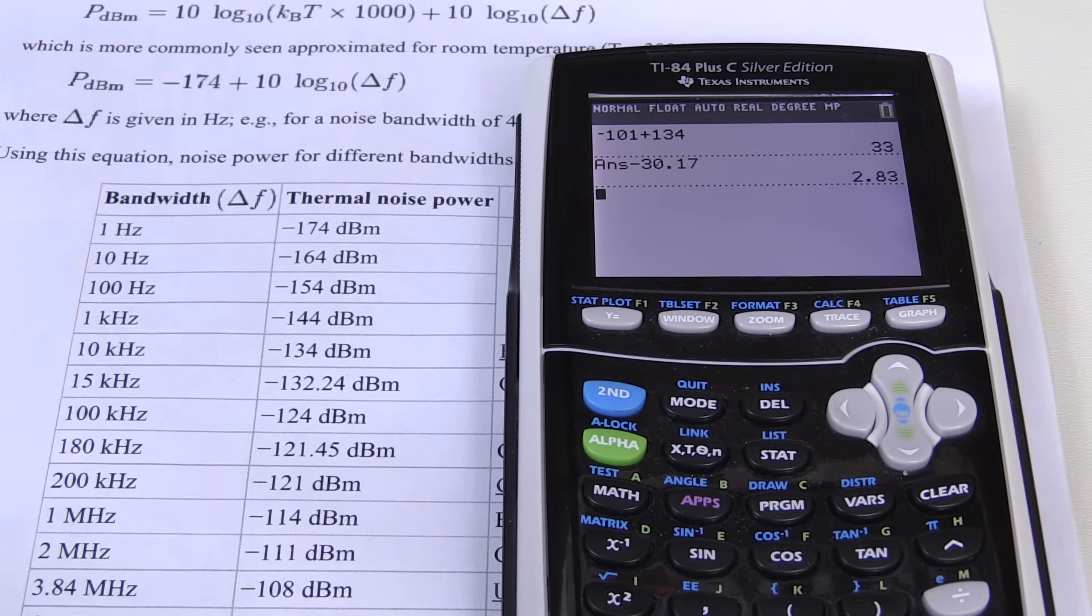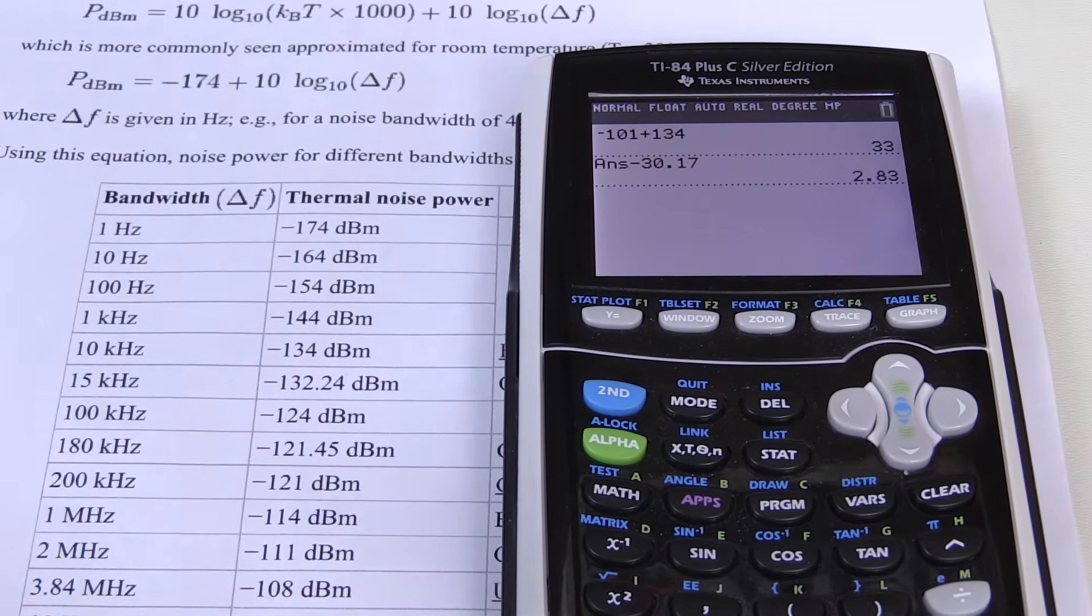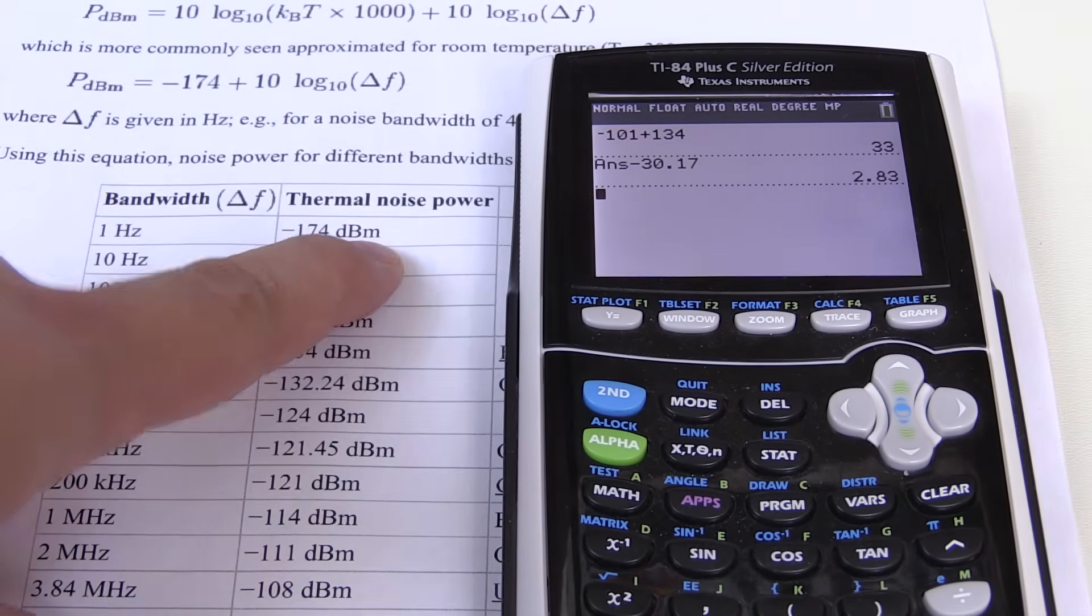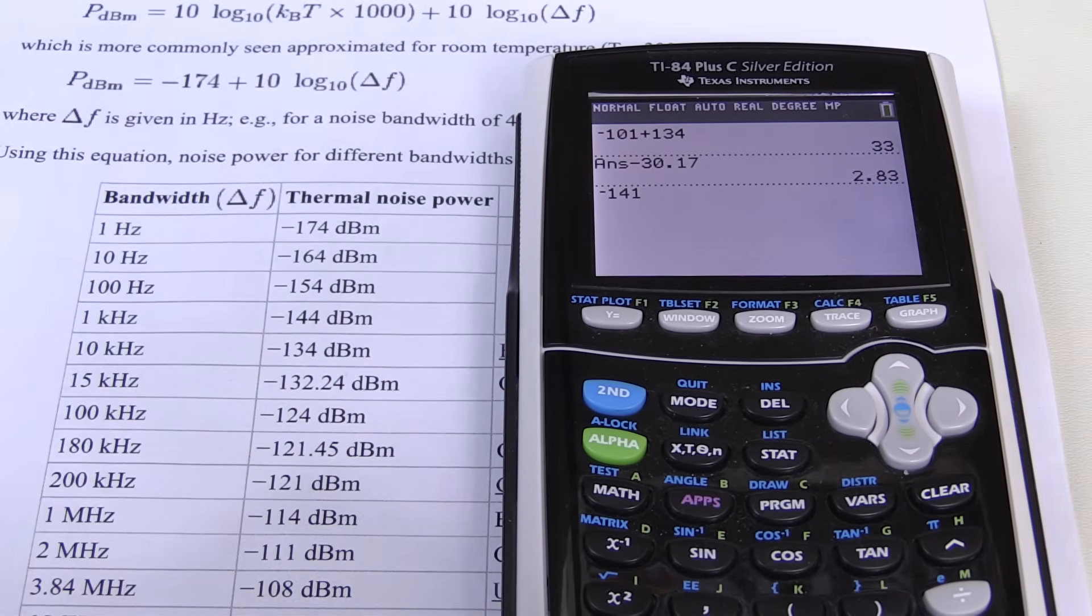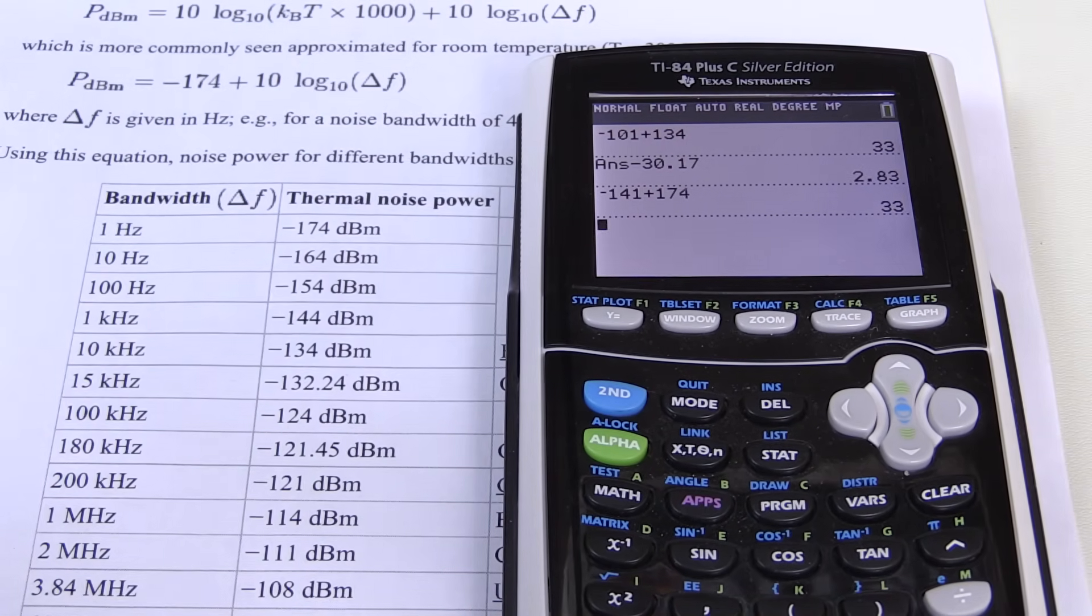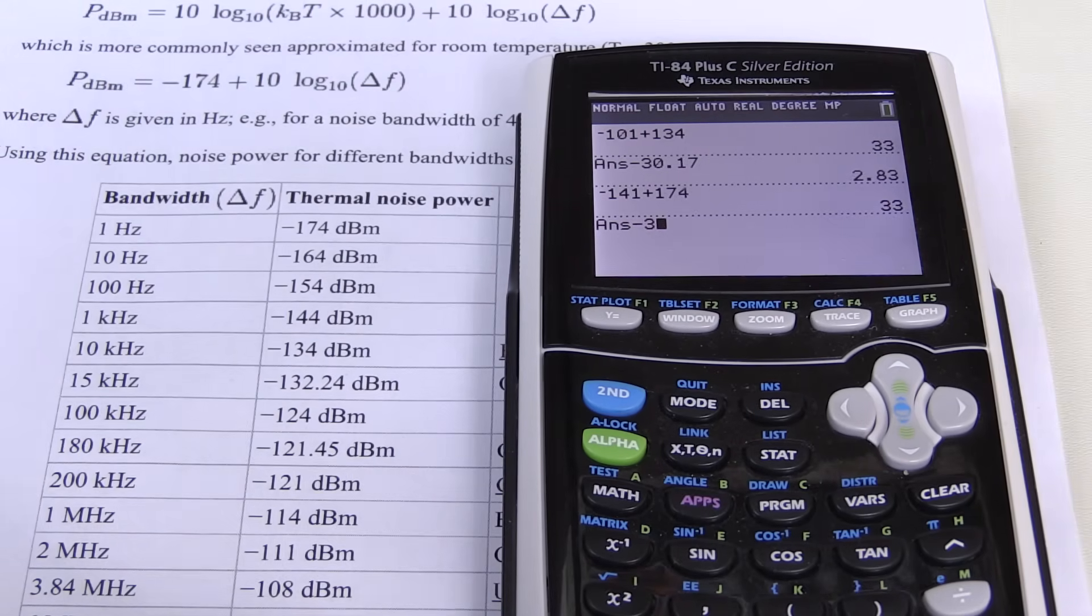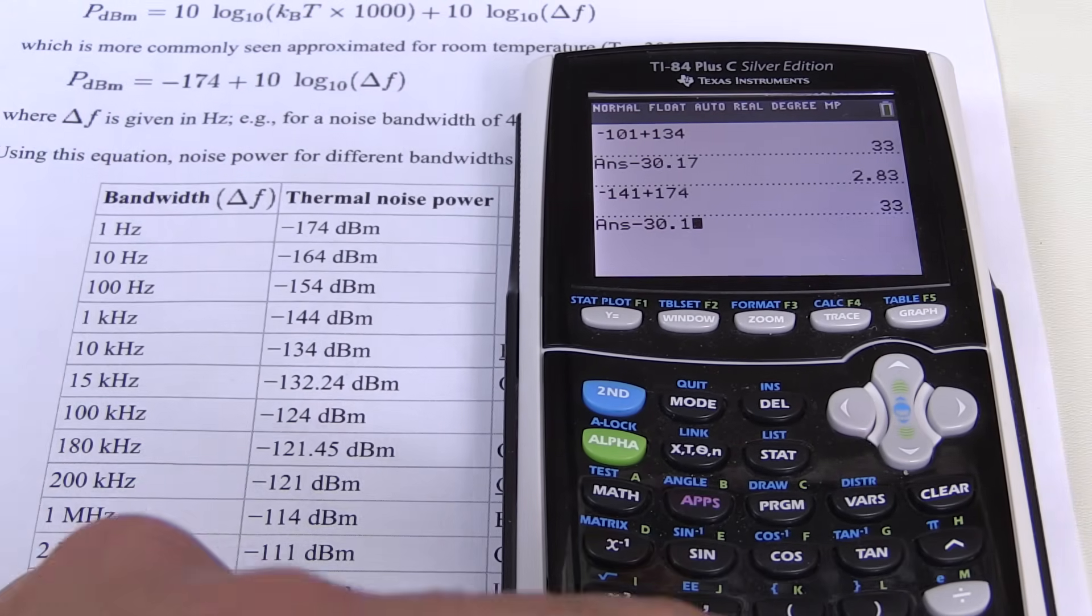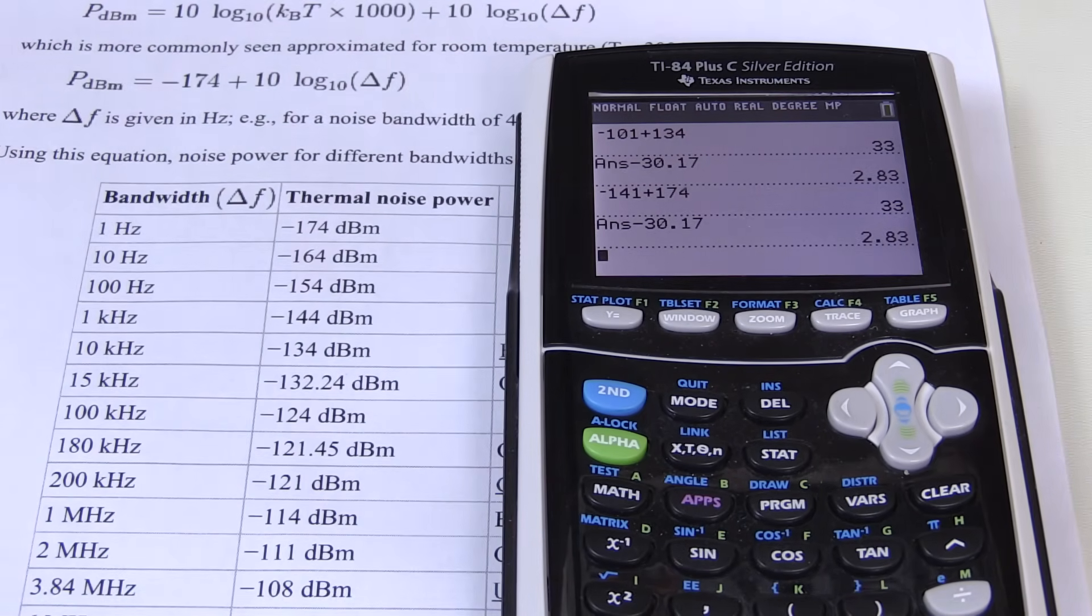And we're going to do a cross check. We also remember that the spectral density was given as negative 141 dBm per hertz. So let's do the same play with 1 hertz. So negative 141 plus 174 equals, again, 33. And if we subtract 30.17, yet again, we get a noise figure of 2.83.